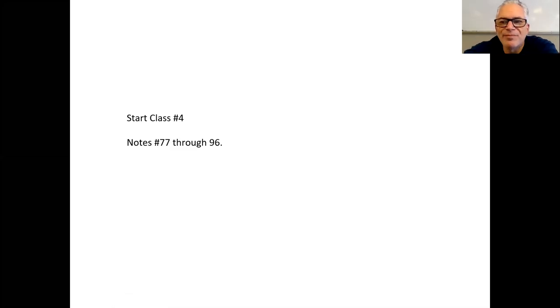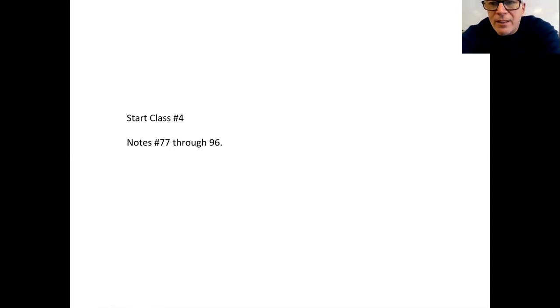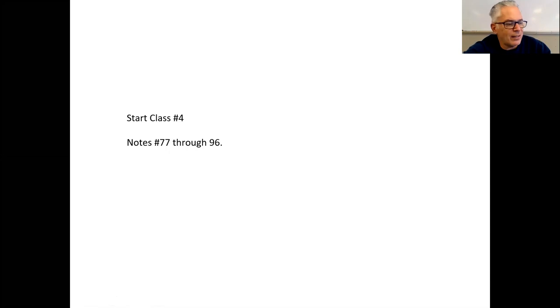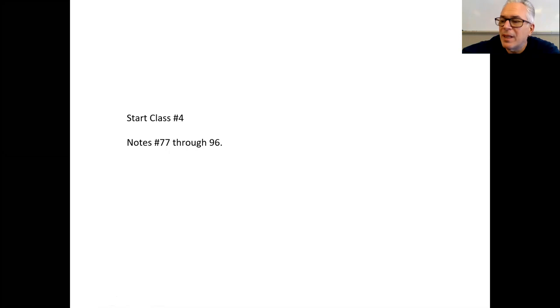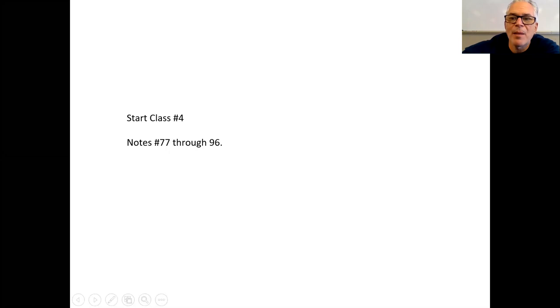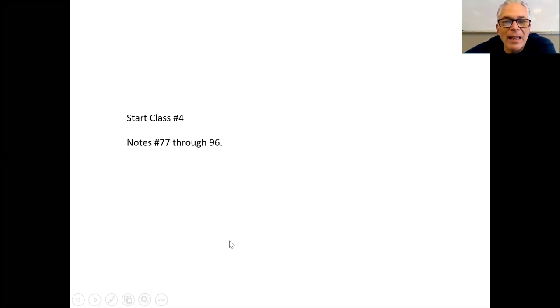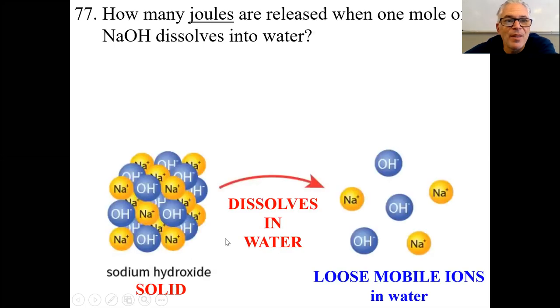Hey kids, Charlie Abuso again. Thermo Chem class four. We're going to do notes 77 and 96. You've got to have a calculator and a reference table. Don't be lazy — you need this stuff in order to do the work. Have something to write on and some paper so you can actually do the work. Don't be lazy. Be happy and excited. This is Thermo Chem. Here we go.